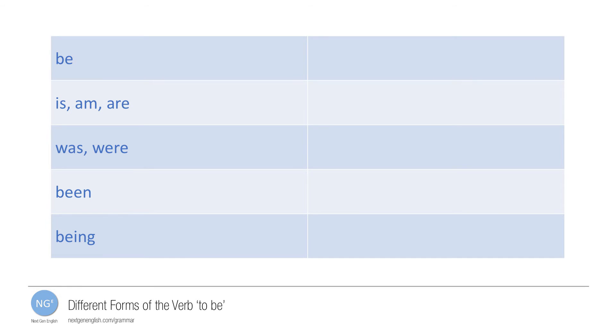So to summarize, the verb to be has eight different forms. Be is the infinitive with or without to. We use is, am, or are for the present simple tense. Was or were are used for the past simple. Been is used in perfect tenses, and being is the present participle form.